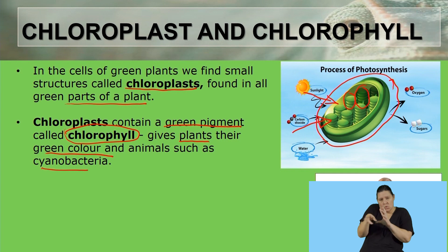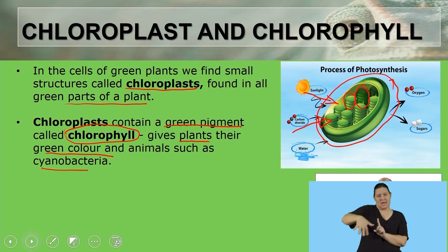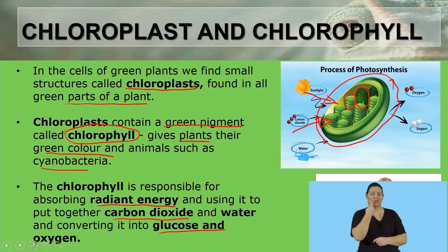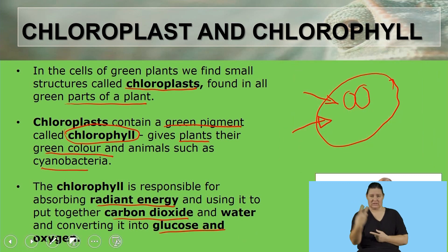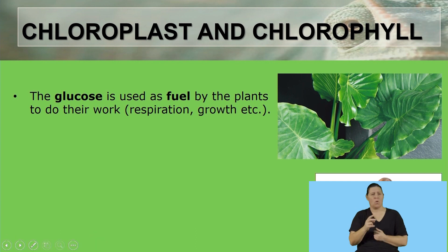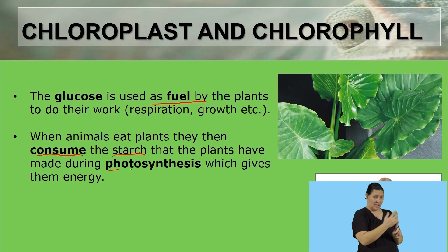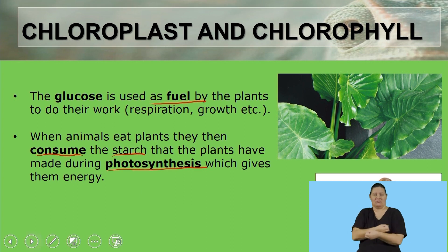The chlorophyll is responsible for absorbing energy from the sun and the carbon dioxide that comes from the atmosphere. So the chlorophyll is responsible for absorbing the radiant energy, the carbon dioxide, and it also converts the water into glucose and oxygen, which are the products of photosynthesis. The glucose is used as fuel by plants to do their work — the life processes that the plant has to undergo, such as respiration, growth, reproduction, and more. When animals eat the plants, they consume the starch. The glucose is stored as starch in plants, so when animals eat the plant, they consume the starch that was made during photosynthesis, which then gives them the energy they need to perform tasks.